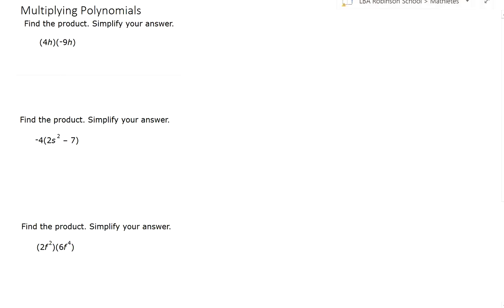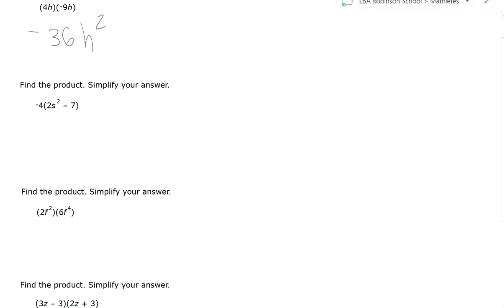So as we move on to the examples, let's see here. We have 4h times negative 9h. Now here the power of h is simply 1. If it's not written, it's 1. So 4 times negative 9, it's negative 36 and then h times h is simply h squared.